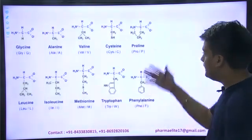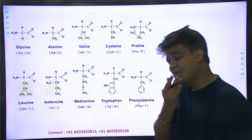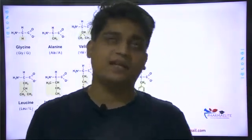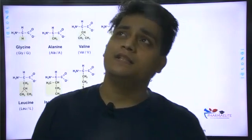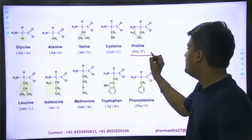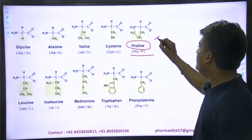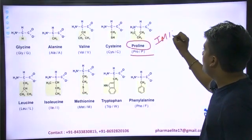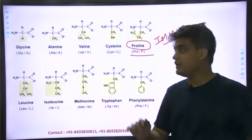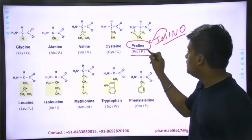Here are all your amino acids. The most important MCQ that has appeared in the paper at least three times in the last few years — once or twice in GPAT — is: 'Which among the following is an imino acid?' Imino, not amino. Keep rolling your answer; don't forget this classification.